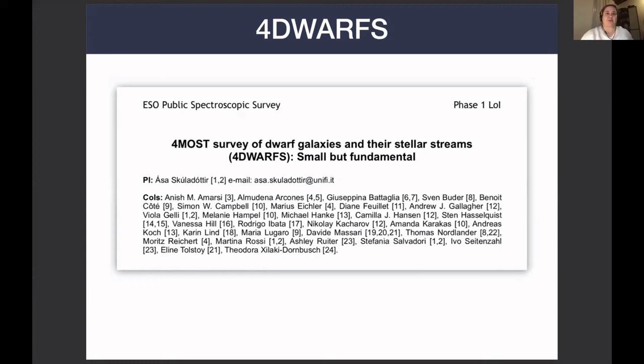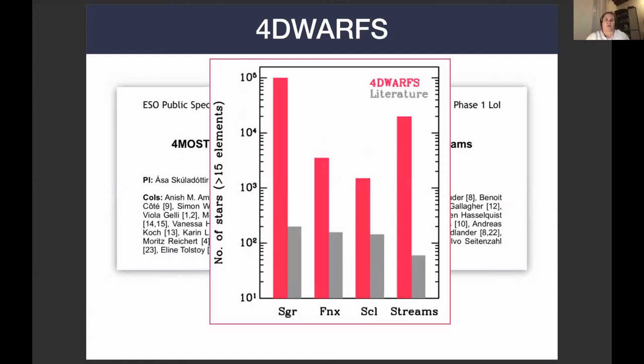So just to show you what this would mean, in gray, we have the number of stars that already have detailed chemical abundance patterns in various galaxies. And in pink, you see what we get from the survey. And note that this is a logarithmic scale. So if this goes through, it will completely revolutionize our understanding of these systems.